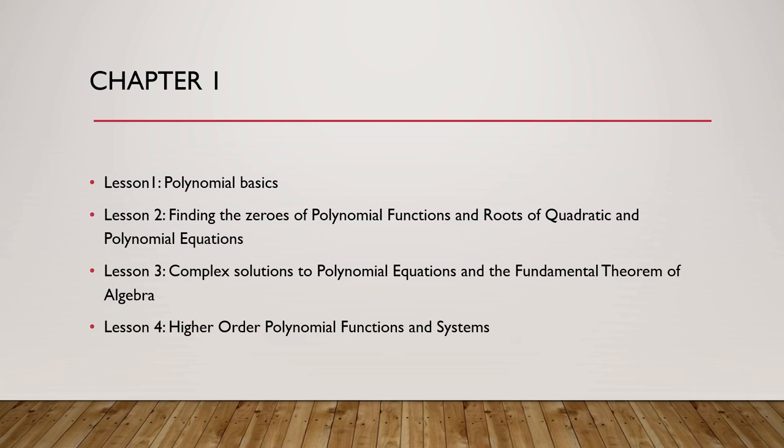The zeros of polynomial function p of x are the values of x that makes this expression equal to 0. They are also known as the roots or the solutions of the polynomial equation p of x equal to 0.